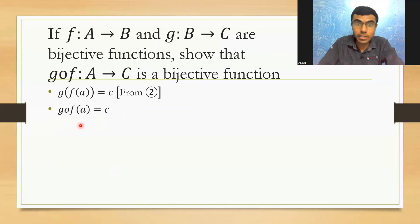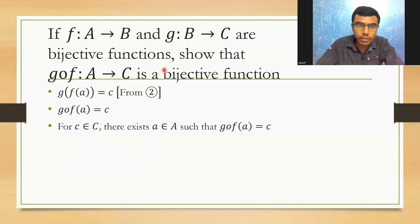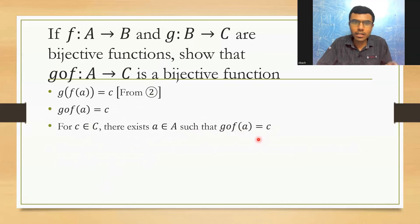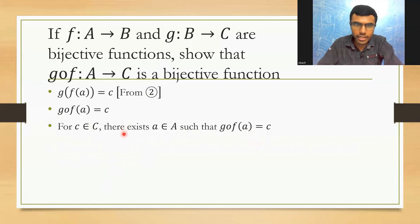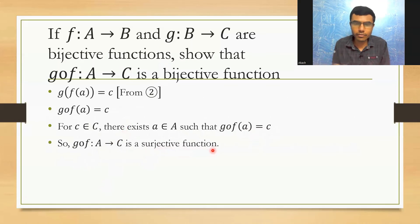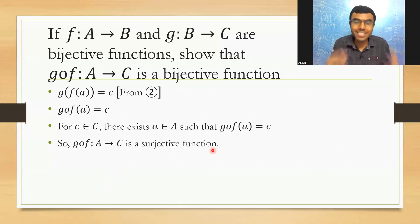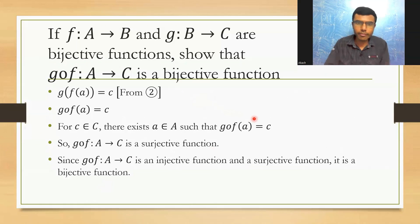So what does this mean? g∘f(a) = c means that for c belonging to C, there exists an a belonging to A such that g∘f(a) = c. For every element in the codomain C, there is an element in the domain A — so g∘f:A→C is a surjective function. Since g∘f:A→C is both an injective function and a surjective function, it is also a bijective function. Hence proved.